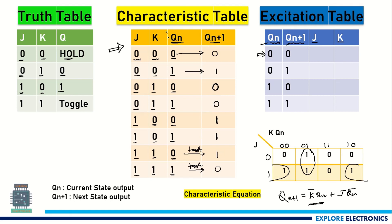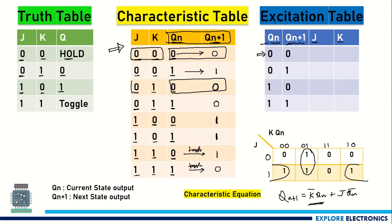...we need to look at the Qn and Qn+1 columns for the 0,0 combination. Here Qn and Qn+1 is 0,0, and here also Qn and Qn+1 is 0,0. So we need to take these two cases into consideration.